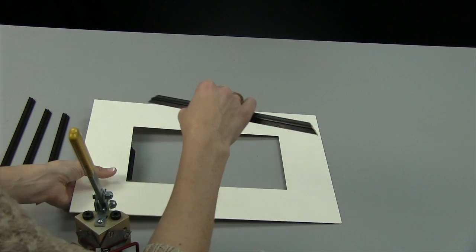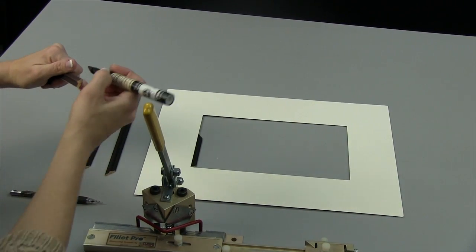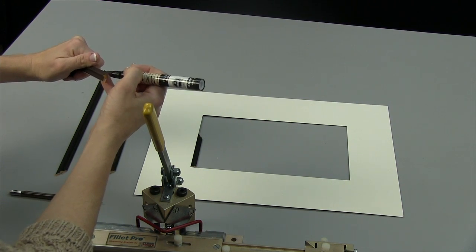Color the edges of the fillet with a paint dauber and remove any excess paint before assembling the fillet into the mat.